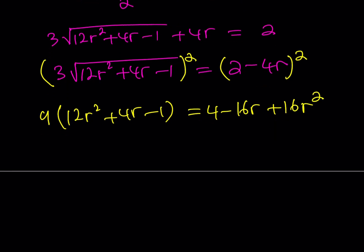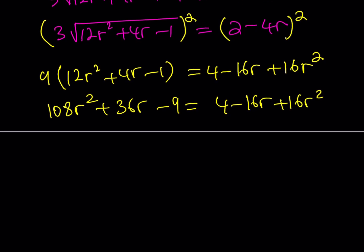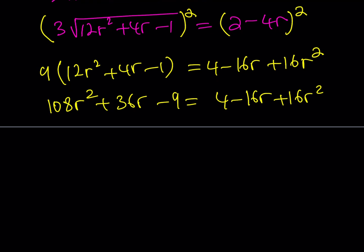Awesome. Let's go ahead and distribute here. We get 108R squared plus 36R minus 9 is equal to 4 minus 16R plus 16R squared. If you go ahead and subtract everything from the left-hand side, 108 minus 16 is going to be 92R squared. And then 36R plus 16R, that's going to give us 52R. Negative 9 minus 4 is going to give you negative 13.